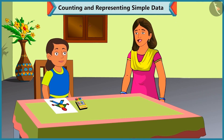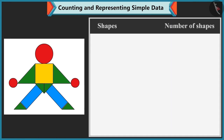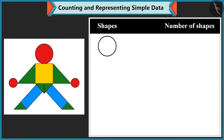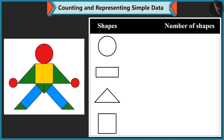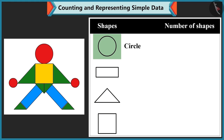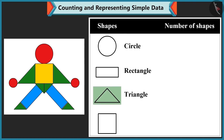Mummy asks what Bubbly is doing and compliments the beautiful picture. She asks which shapes are present. Bubbly identifies: circles, a rectangle, triangles and a square. Mummy asks her to name all the shapes again and Bubbly confirms: circle, rectangle, triangle and square.